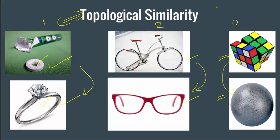So what these scientists are arguing is: above the critical temperature, when the material exhibits normal properties, it has a different topology. The topology changes — the geometrical pattern changes once it goes below critical temperature — and that is why it starts exhibiting some fantastic, extraordinary properties.